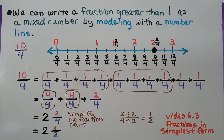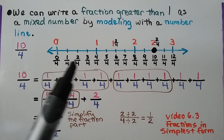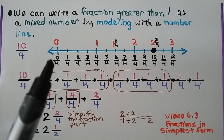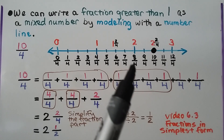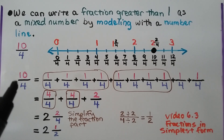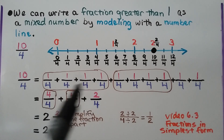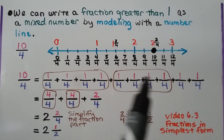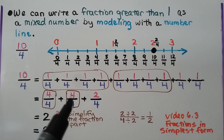We can write a fraction greater than one as a mixed number by modeling with a number line. We have ten fourths. Our number line goes from zero (zero fourths) up to three (twelve fourths). Four fourths with the same numerator and denominator equals one whole; eight fourths is two whole. Ten fourths is two and two fourths. We can also see this as ten one-fourth unit fractions: four fourths equals one whole, another four fourths equals another whole, with two fourths left over — two and two fourths.